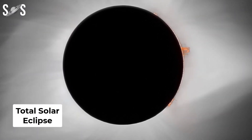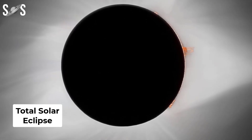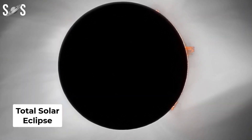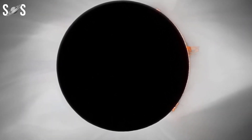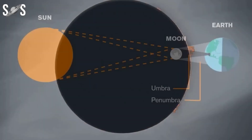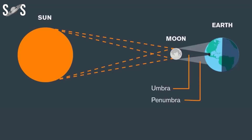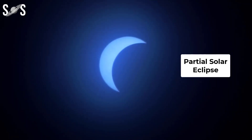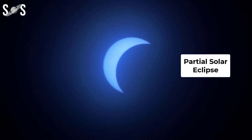The moon's umbra, the shadow's dark central portion, causes total solar eclipses, where the moon appears a little larger than the sun and covers it completely. The penumbra, the lighter outer part of the shadow, creates partial solar eclipses, where the moon obscures only a part of the sun's disk.